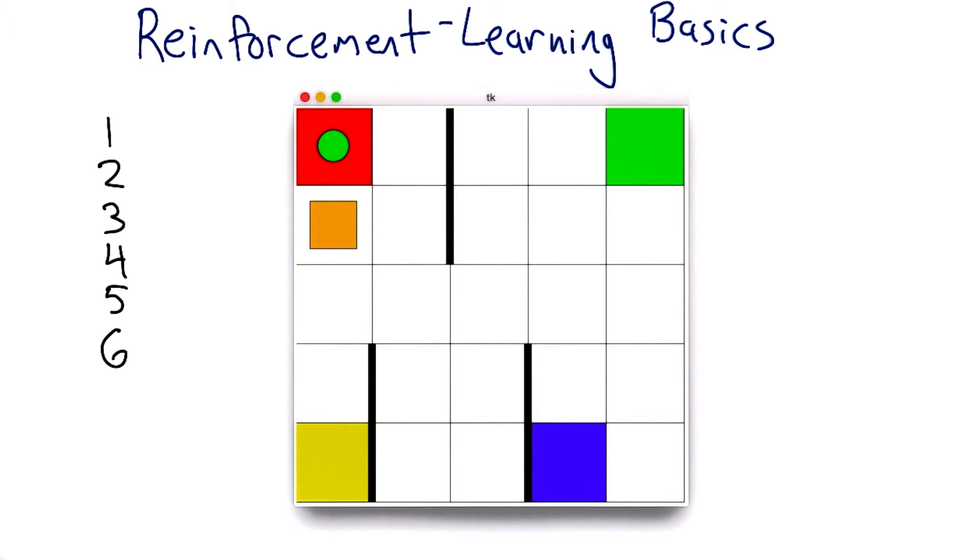The states in this case are going to be visualized to you in terms of this sort of Mondrian looking picture in the middle of the screen. Mondrian. I'm going to go with that. Okay. And, you know, it's like colors and squares and things.